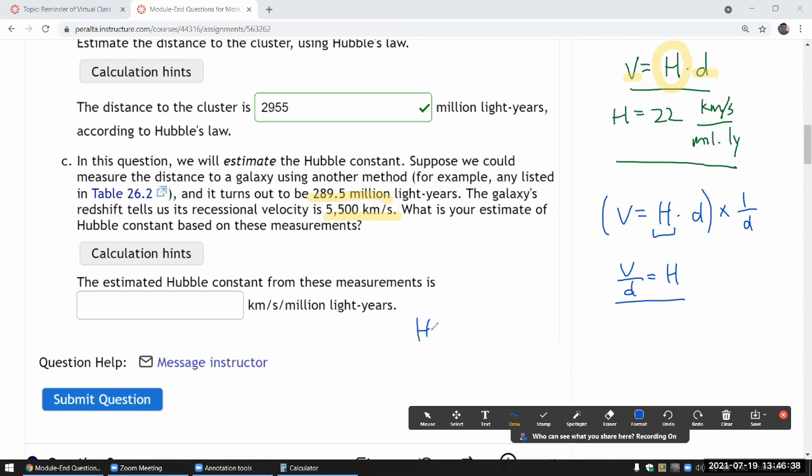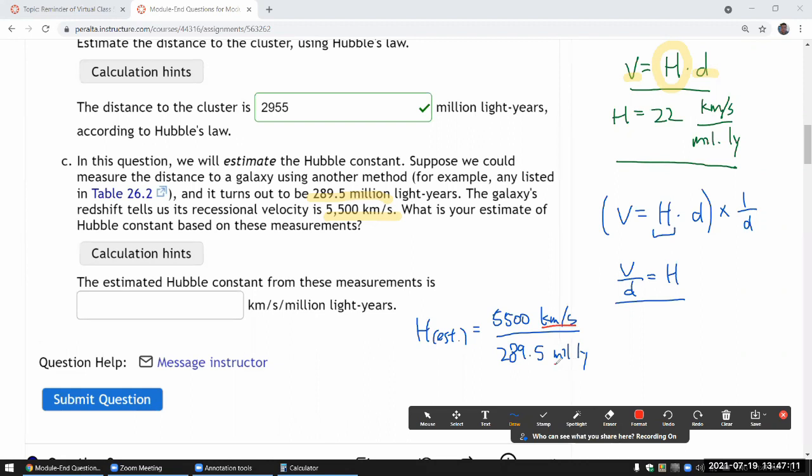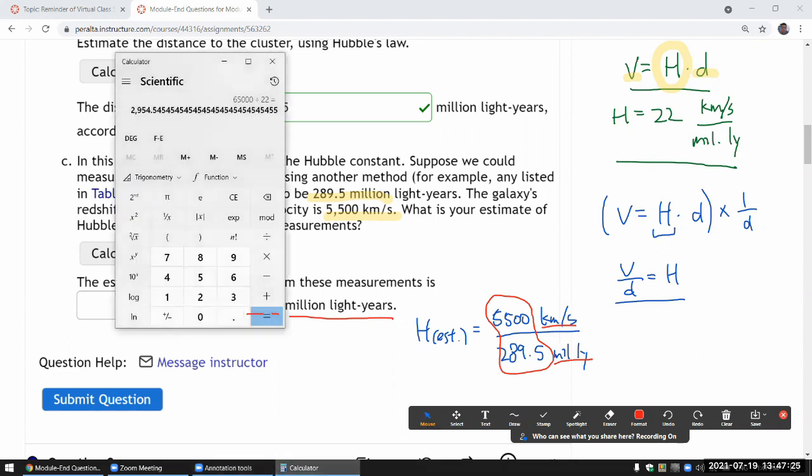Let's write it out. Our estimate of Hubble constant is the velocity, 5,500 km per second divided by that many light years, 289.5 million light years. Let's make sure the unit will work out. So nothing cancels here. And the unit I'm ending up with is kilometers per second per million light year. And I think that's the unit I'm being asked for, kilometers per second per million light years. So just keep everything. I just need to work out these numbers. That's what they will be looking for at the blank. So 5,500 divided by 289.5.